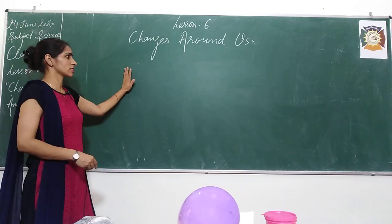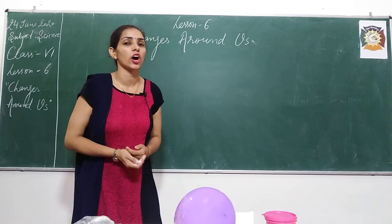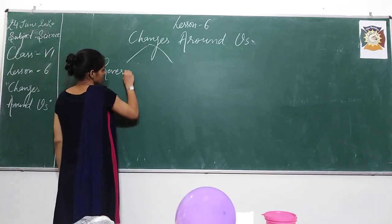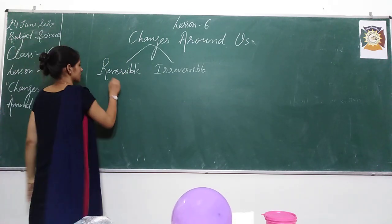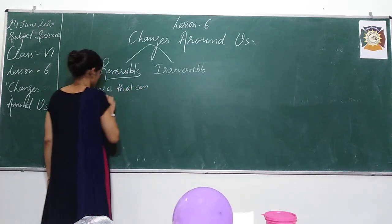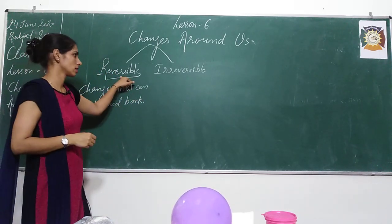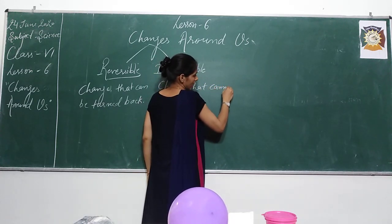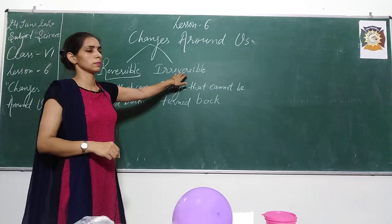You must have noticed that there are some changes which can be turned back, and further there are some other changes which cannot be turned back. So these have been categorized into two changes. It can be reversible or irreversible. So what are reversible changes? Reversible changes means changes that can be turned back are called reversible changes. Next, irreversible changes — changes that cannot be turned back — they are called irreversible changes.